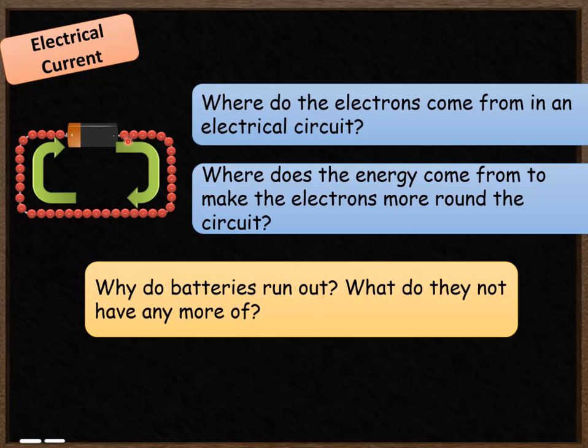Why do batteries run out? Batteries run out because they run out of energy. They don't have any energy left stored inside them. That's what they don't have any more of. The chemicals inside the battery store that energy. And once all the energy has been released, it can no longer move the electrons around the circuit.